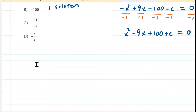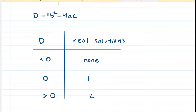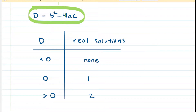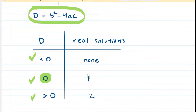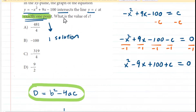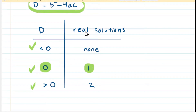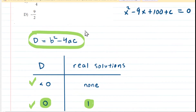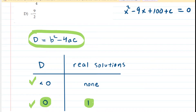The discriminant is an equation you might recognize from the quadratic formula — it's a component of the quadratic formula. The discriminant equals b squared minus 4ac, and there are three possible values it can take on: it can be negative, equal to zero, or positive. If it equals zero, then we have one real solution to our quadratic equation, which is exactly what this question asks for, since the graphs intersect at exactly one point. So we're going to set the discriminant equal to zero.